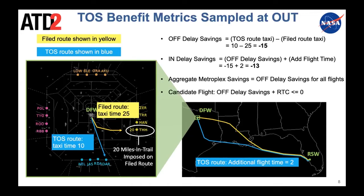We track what we call candidate flights. A flight is a candidate for reroute when the off delay savings exceeds the relative trajectory cost, or RTC — a variable typically representing the flight operator's willingness to fly the alternative trajectory based on additional flight time. For the rest of this paper, we analyze candidate flights: those flights where, at the pushback event, the off delay savings exceeded the relative trajectory cost.